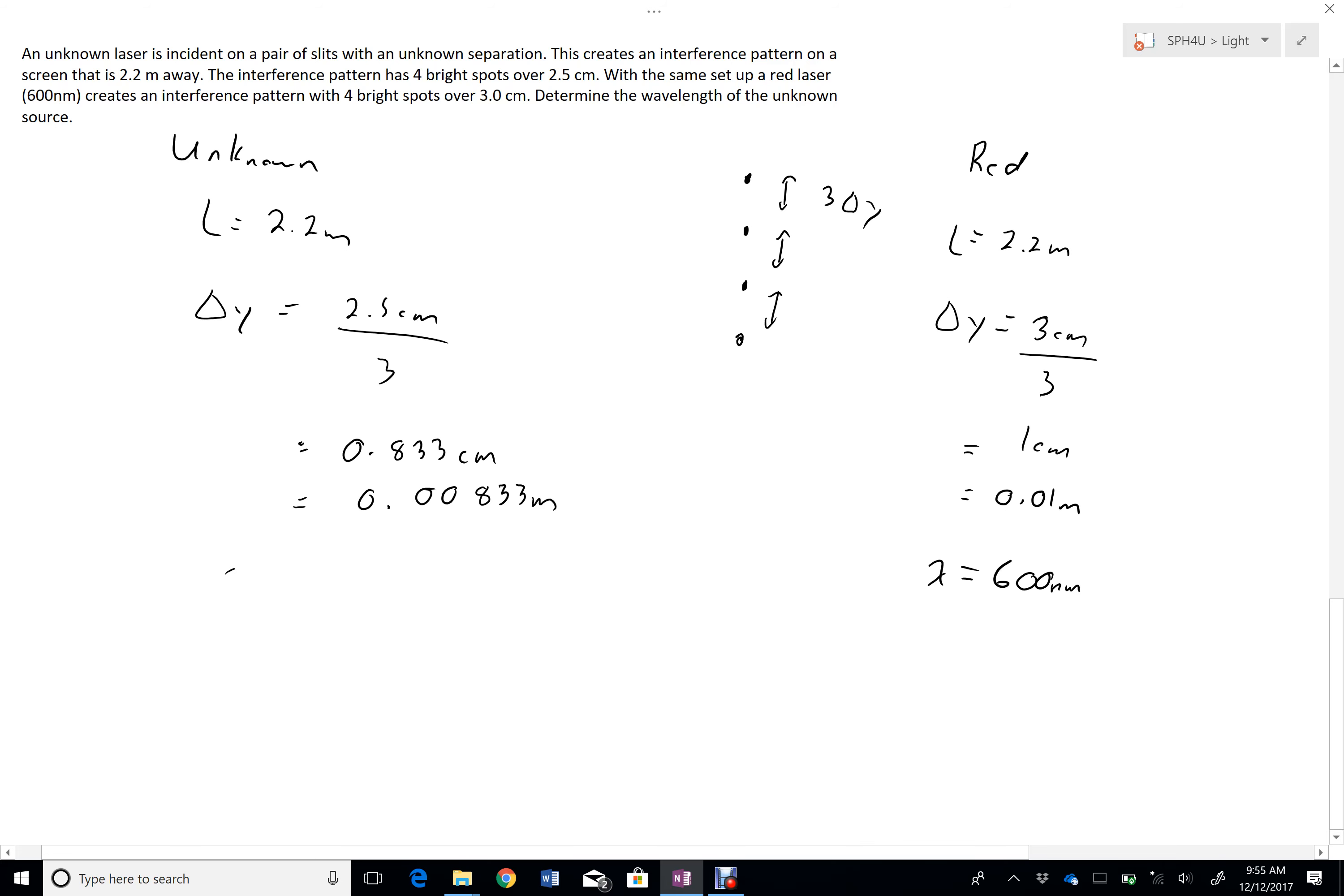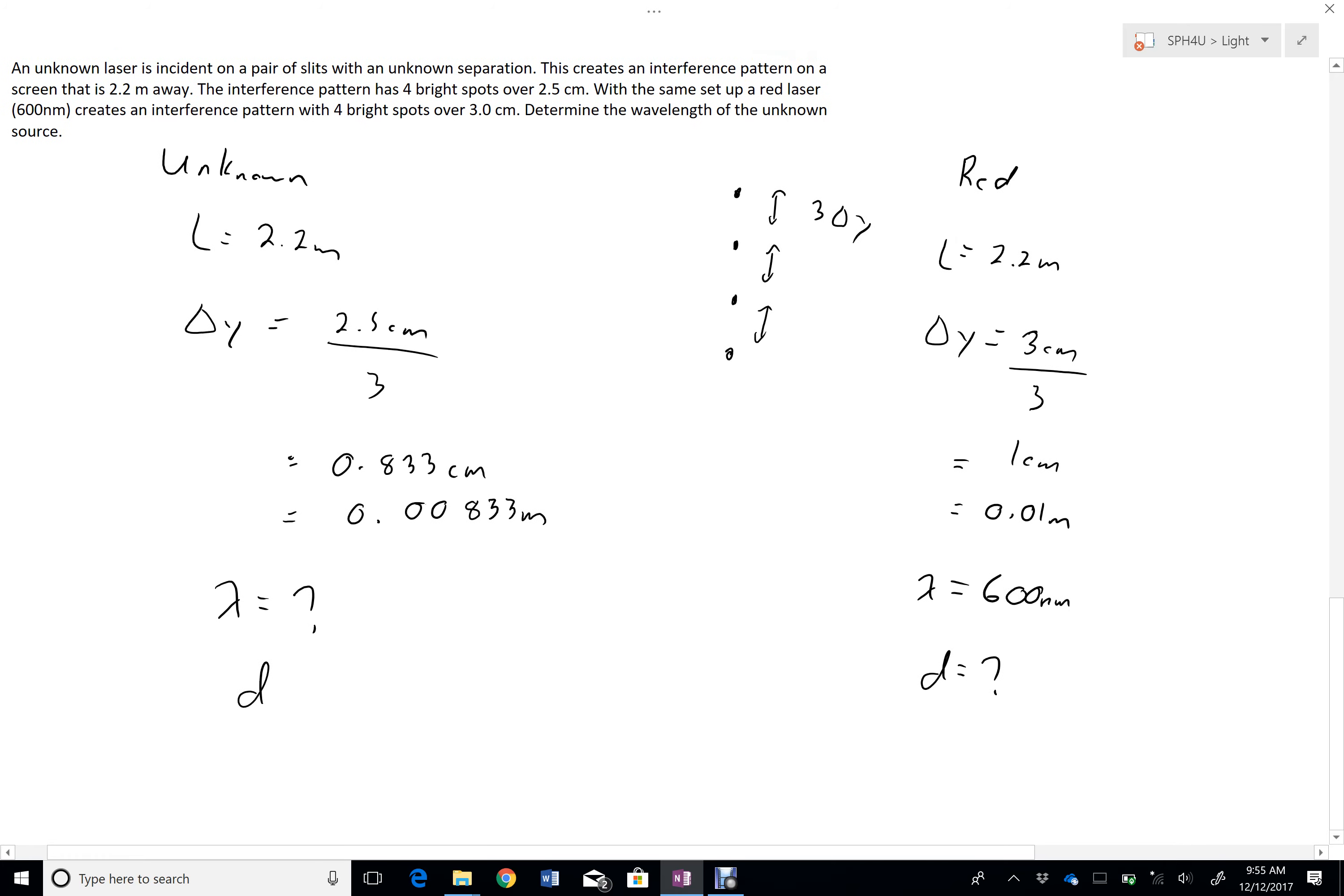Determine the wavelength of the unknown laser. So what I'm going to do here, there's a couple different ways to approach this. I'll do the longer but pretty easy way first. I'm going to use all of this to find D. And since it says that the setup is the same, that'll give me D over here, and then I can solve.